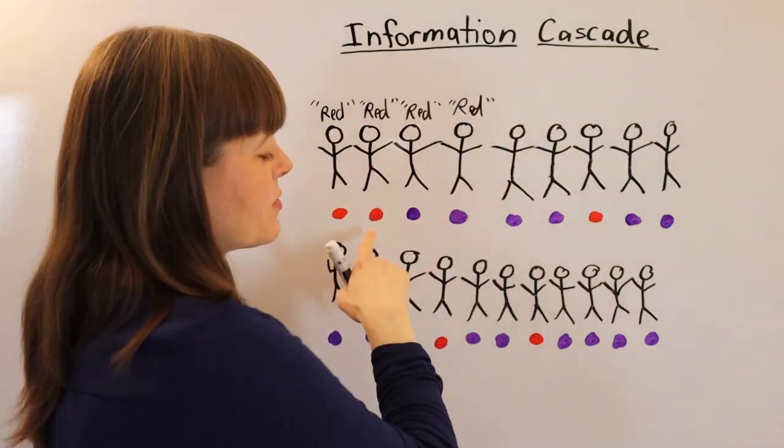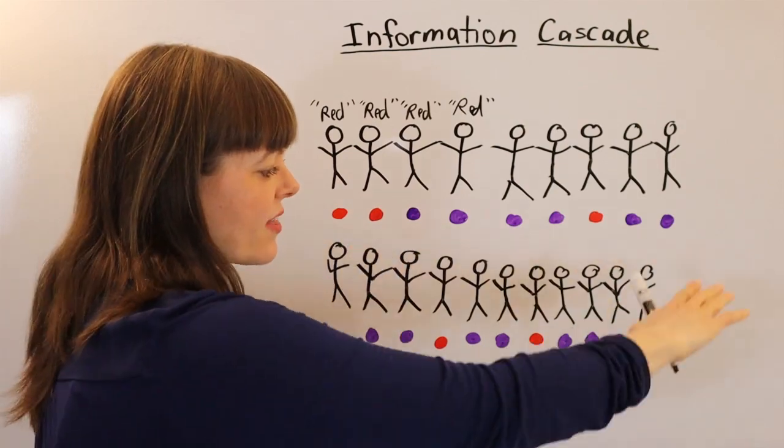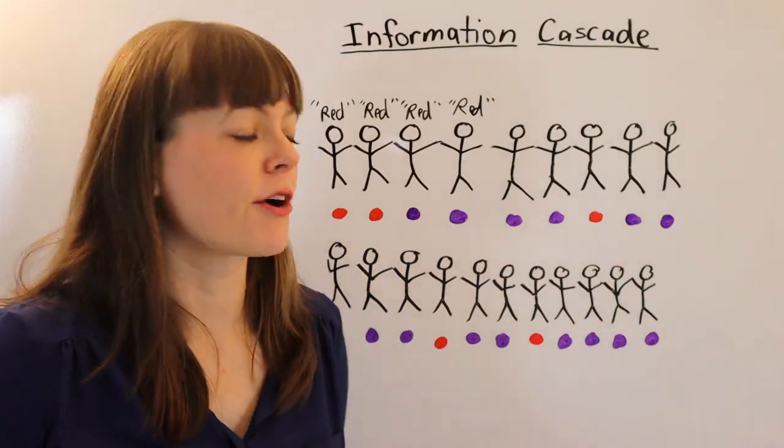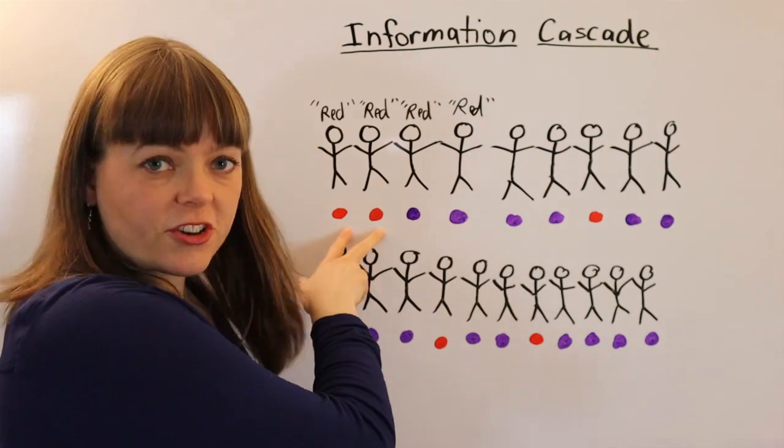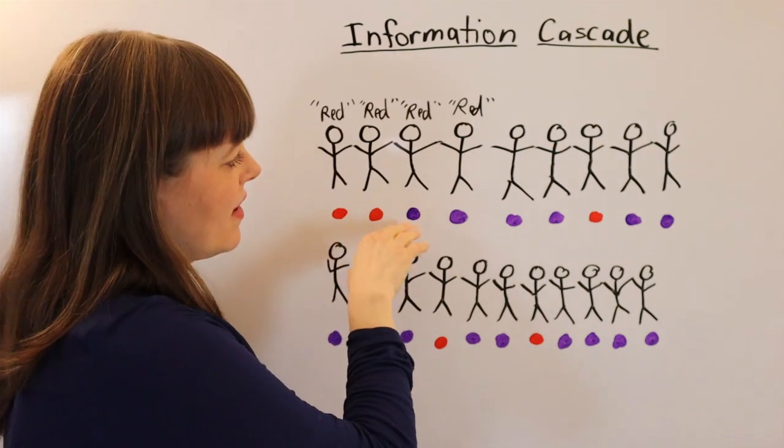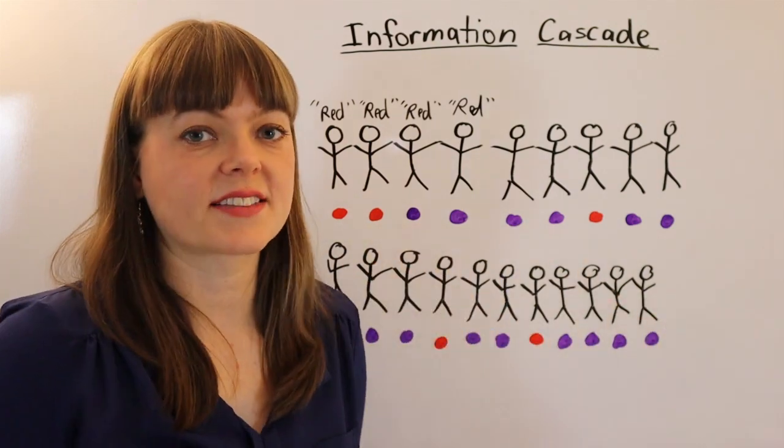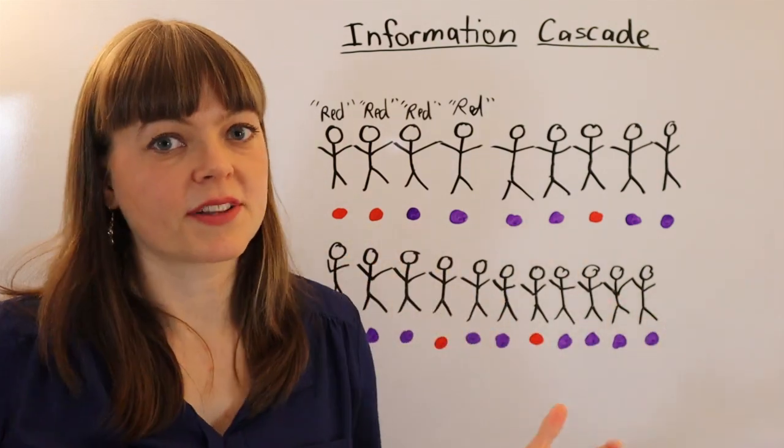And as a matter of fact, as we go down the line, even though in this lineup, only 25% of the marbles are red, because the first two people had randomly drawn red, that is going to continue through as an information cascade through the rest of the population.